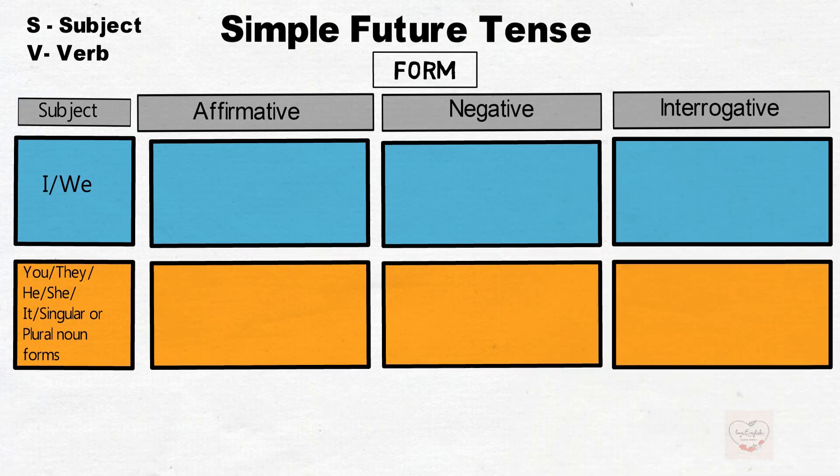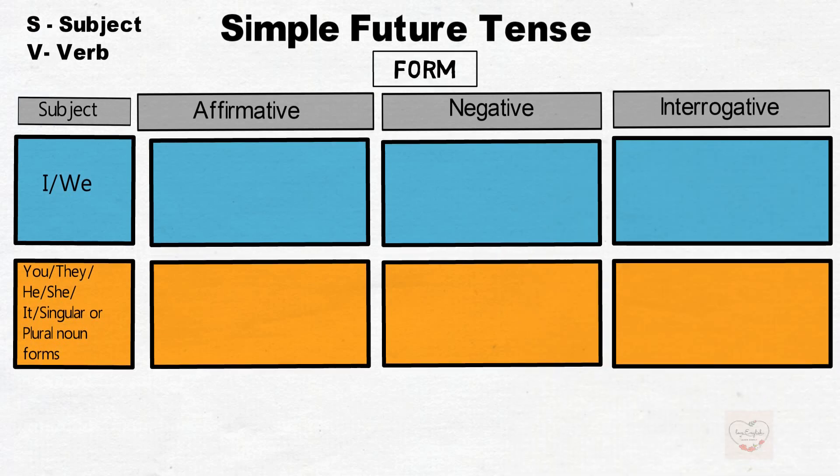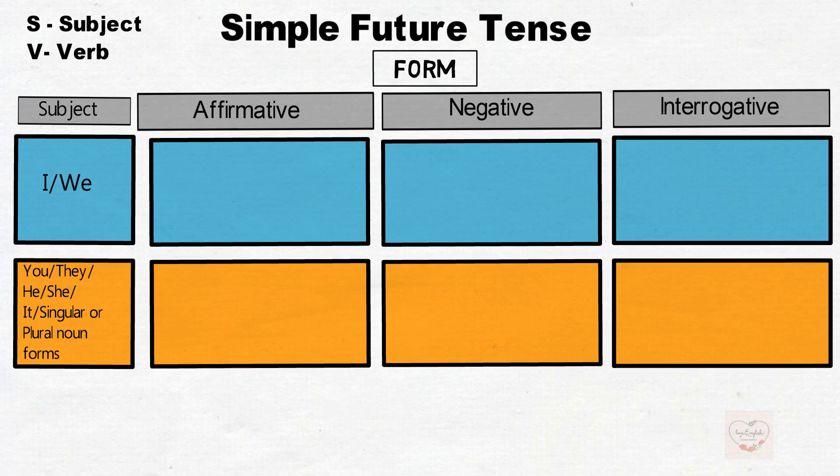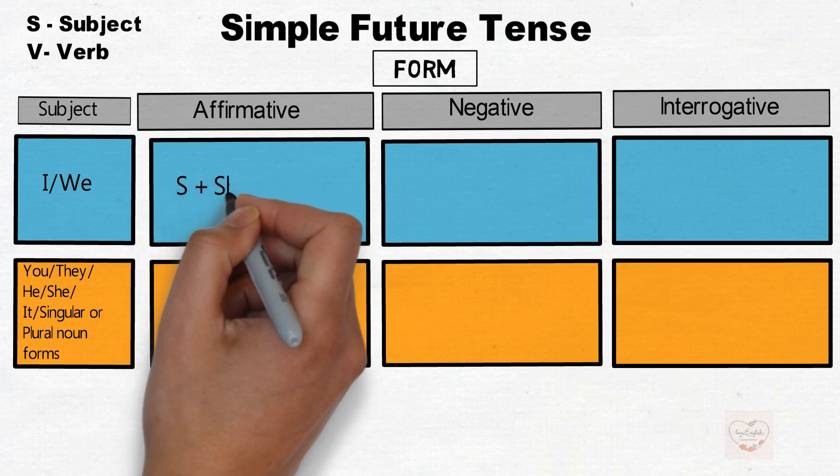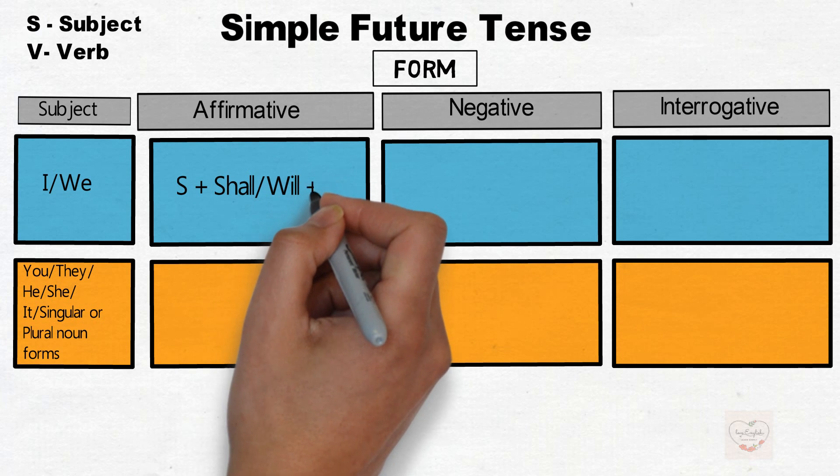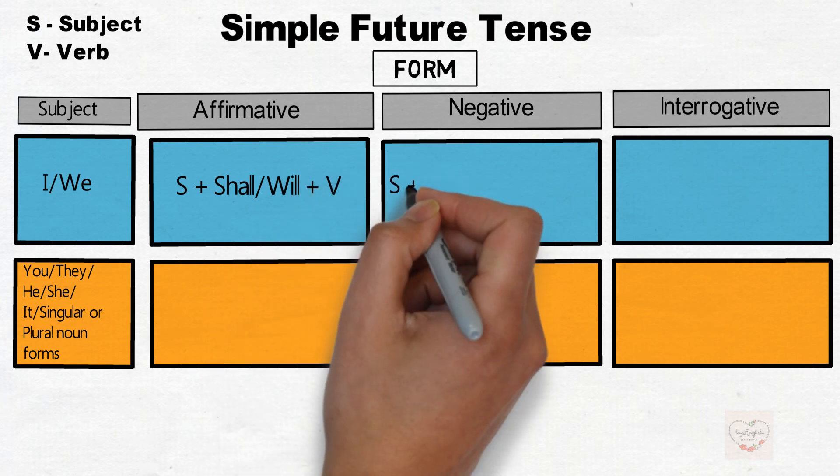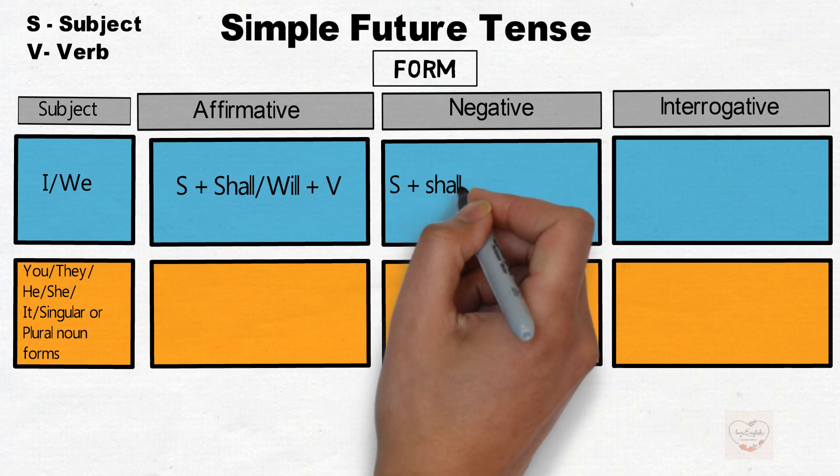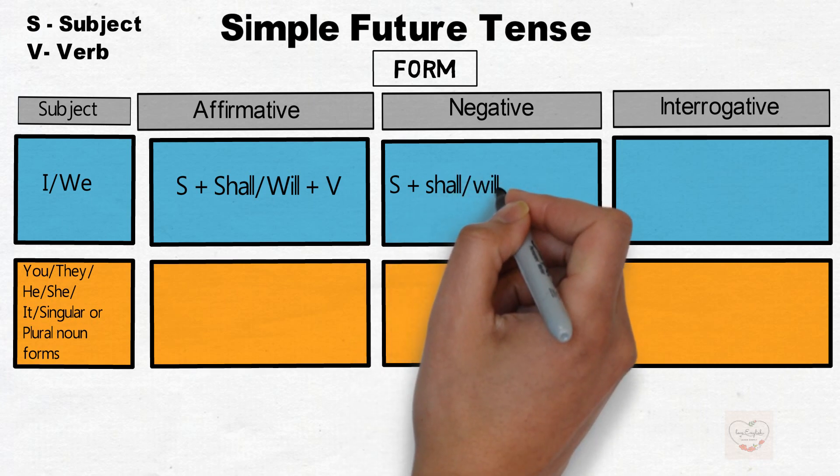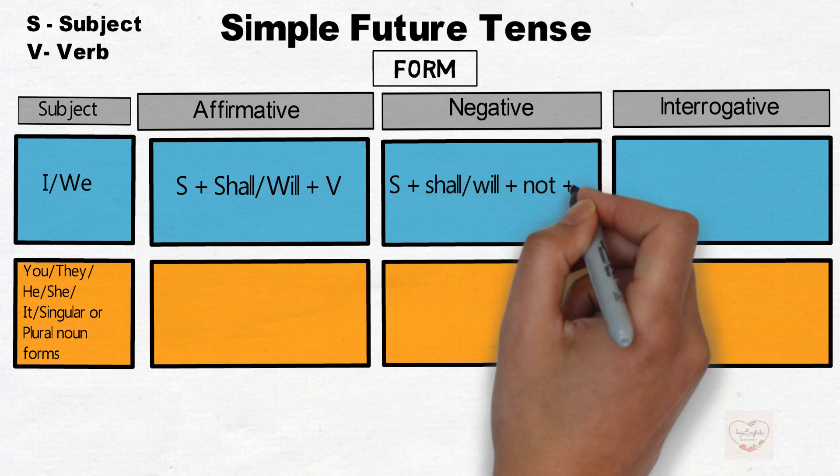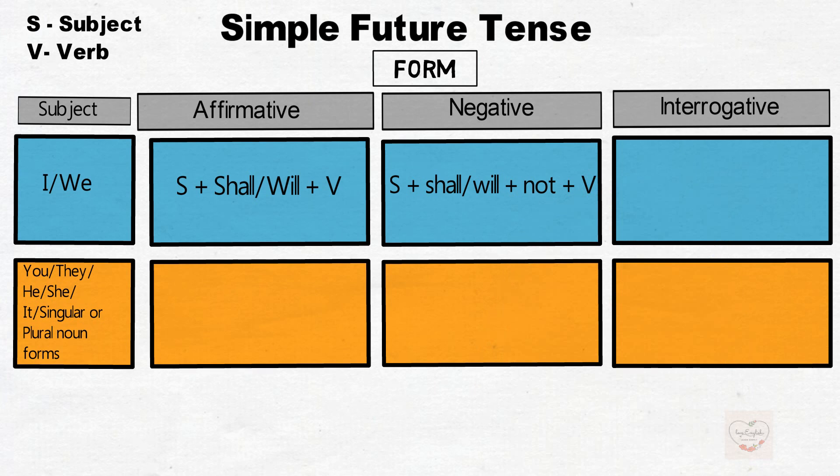If the subject comes as I or we, the affirmative will be subject plus shall or will plus verb. Negative will be subject plus shall or will plus not plus verb.